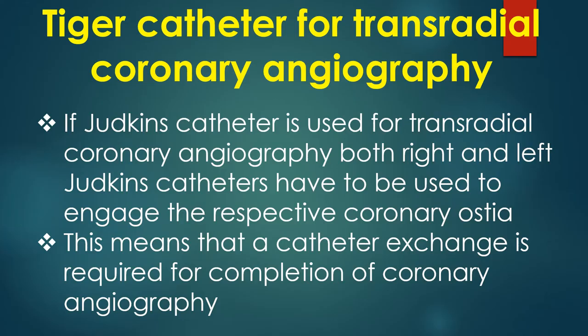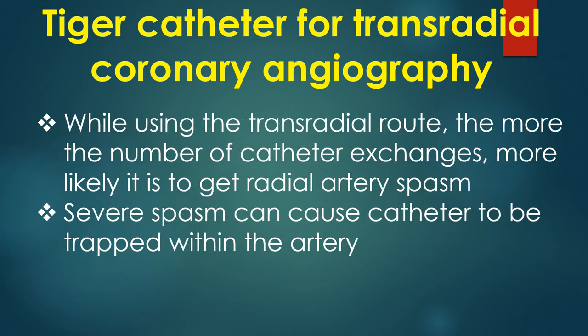If Jutkins catheters are used for transradial coronary angiography, both right and left Jutkins catheters have to be used to engage the respective coronary ostia. This means that a catheter exchange is required to complete the procedure. While using the transradial route, the more catheter exchanges required, the more likely it is to get radial artery spasm. Severe spasm can cause the catheter to become trapped within the artery.